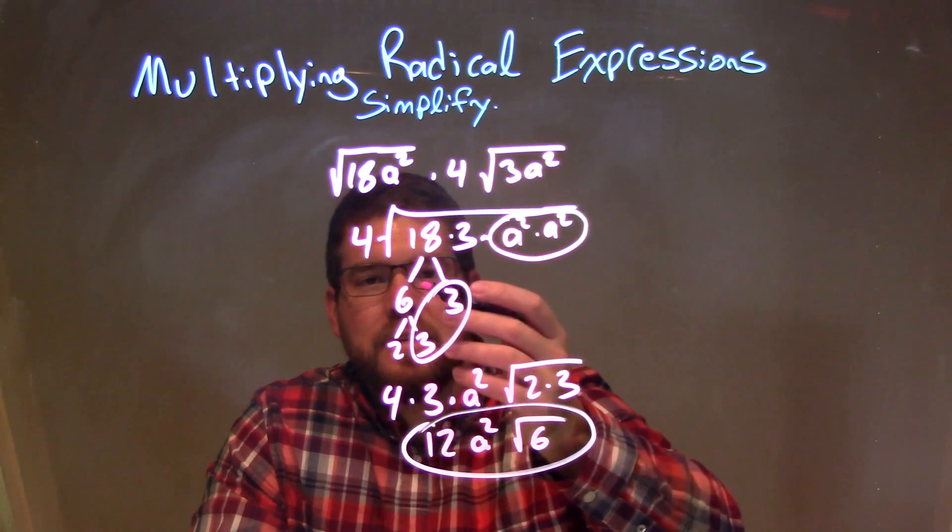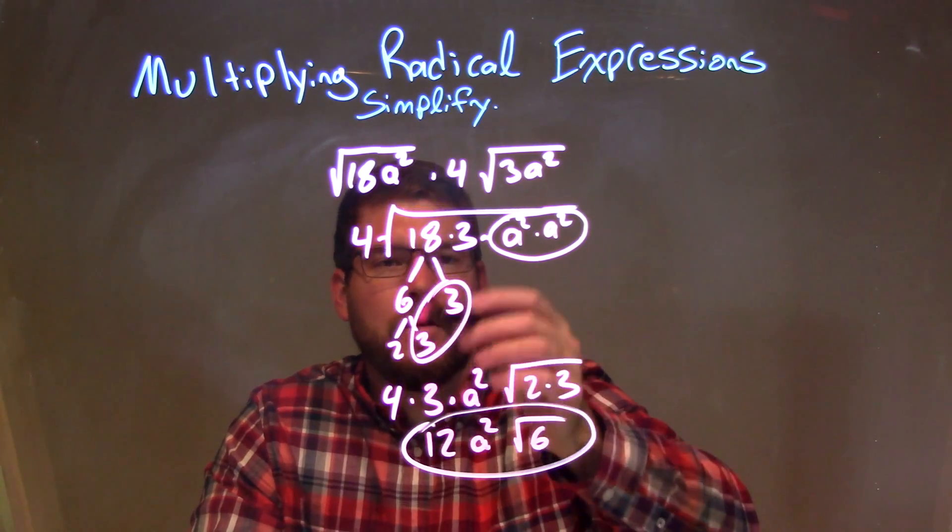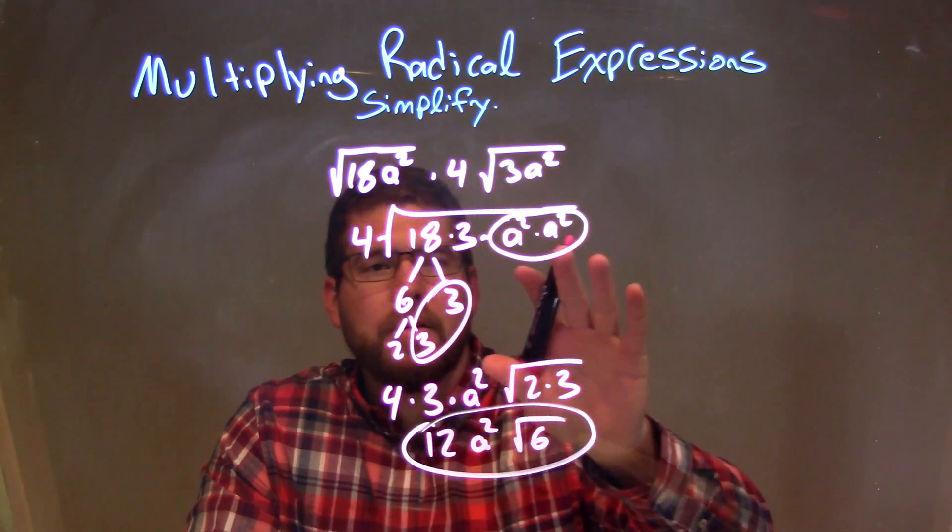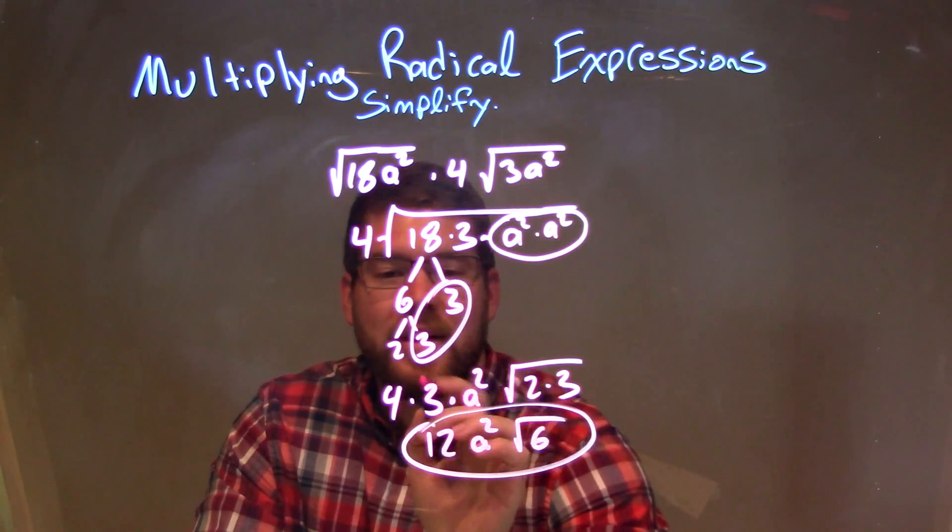I broke down 18 to be 2 times 3 times 3, and we circle our pairs. I have a pair of 3s right there, and a pair of a² right there. So our pairs are represented as singles on the outside.